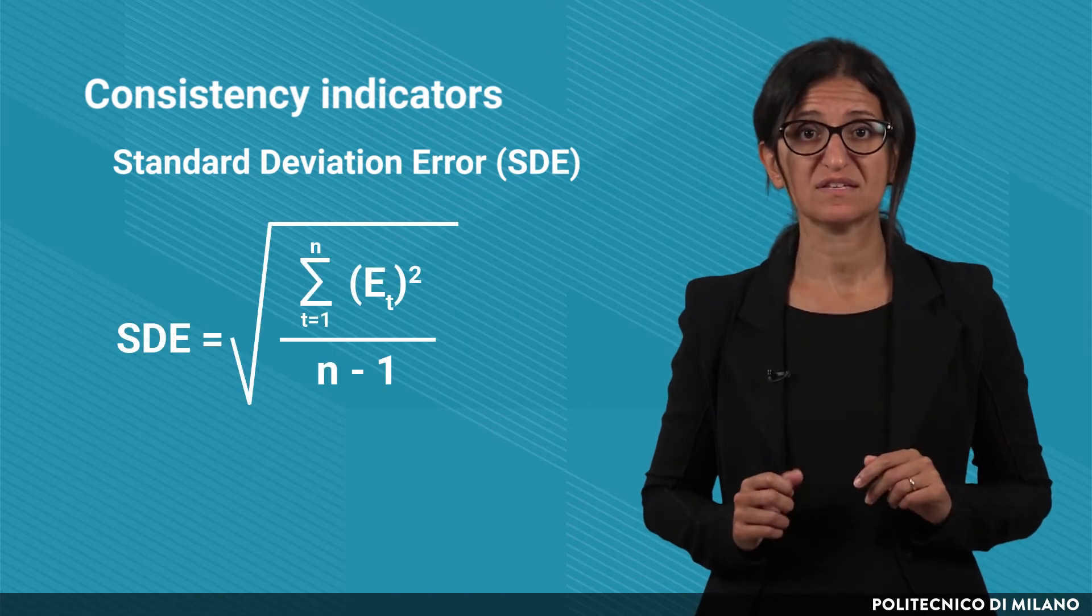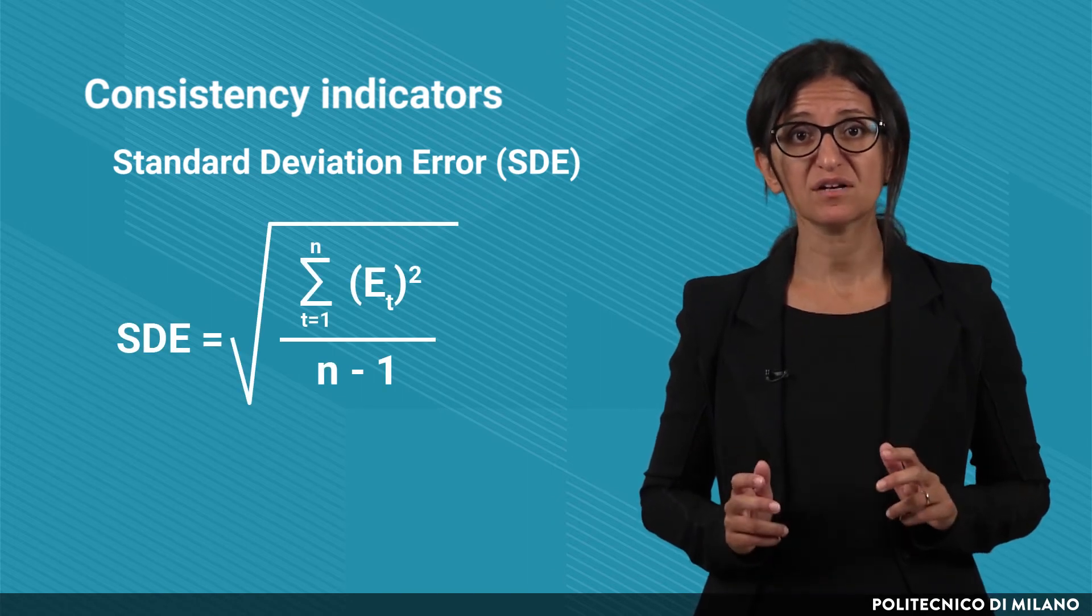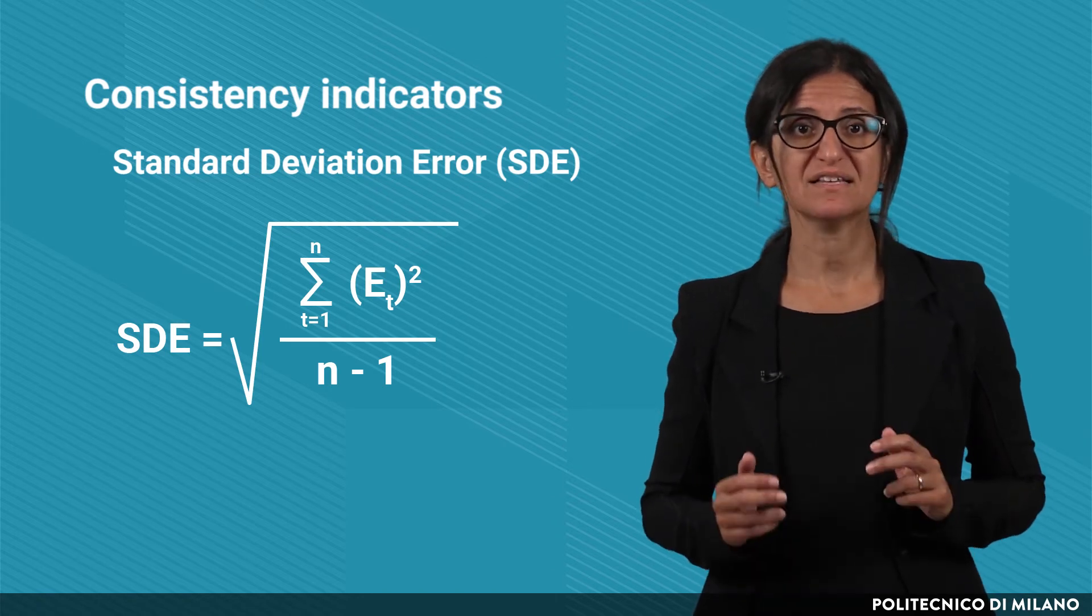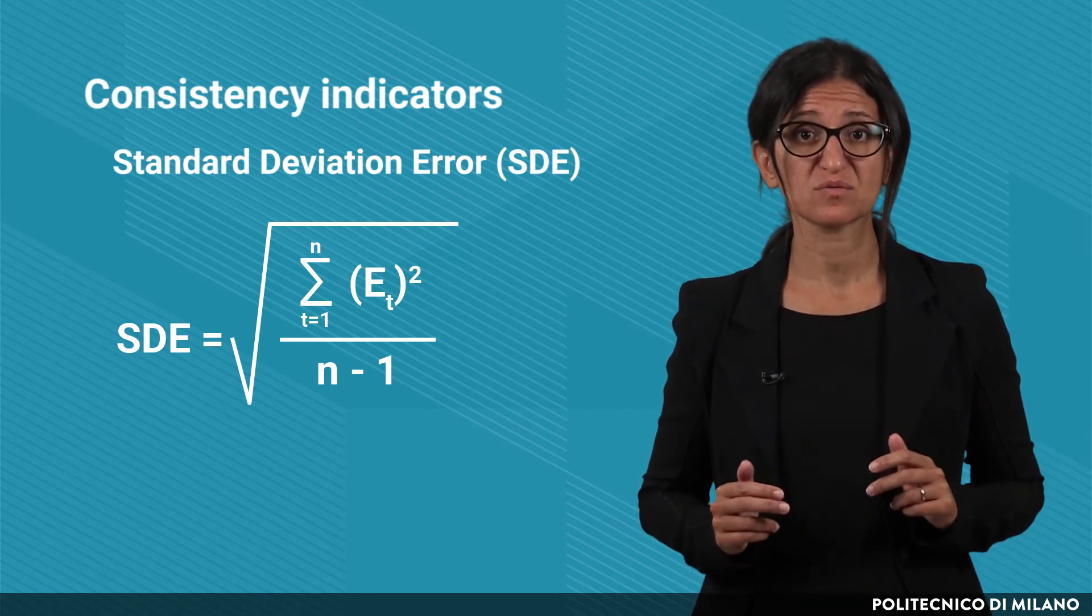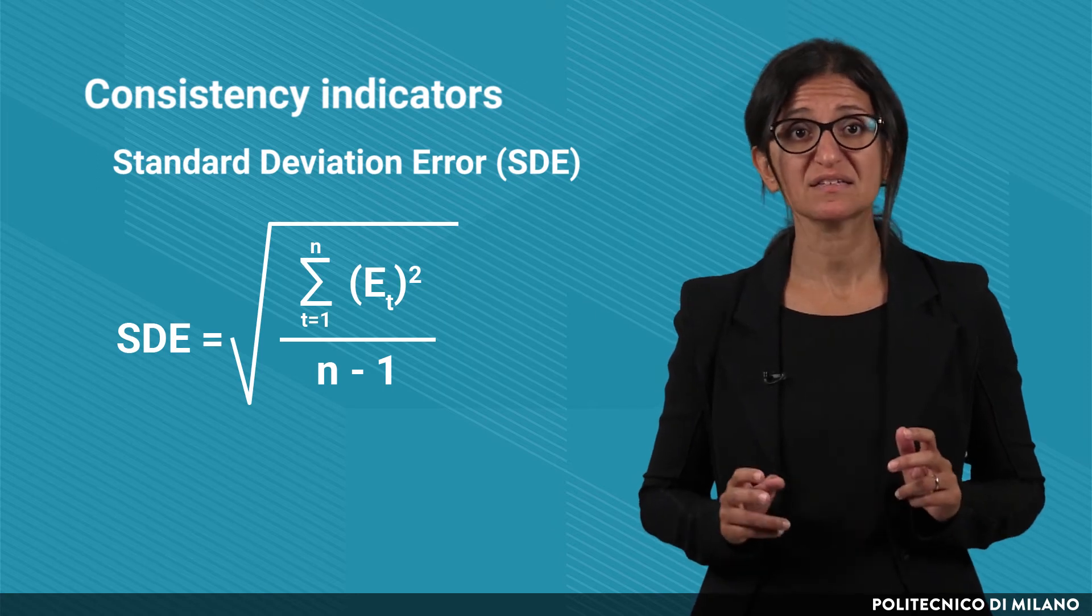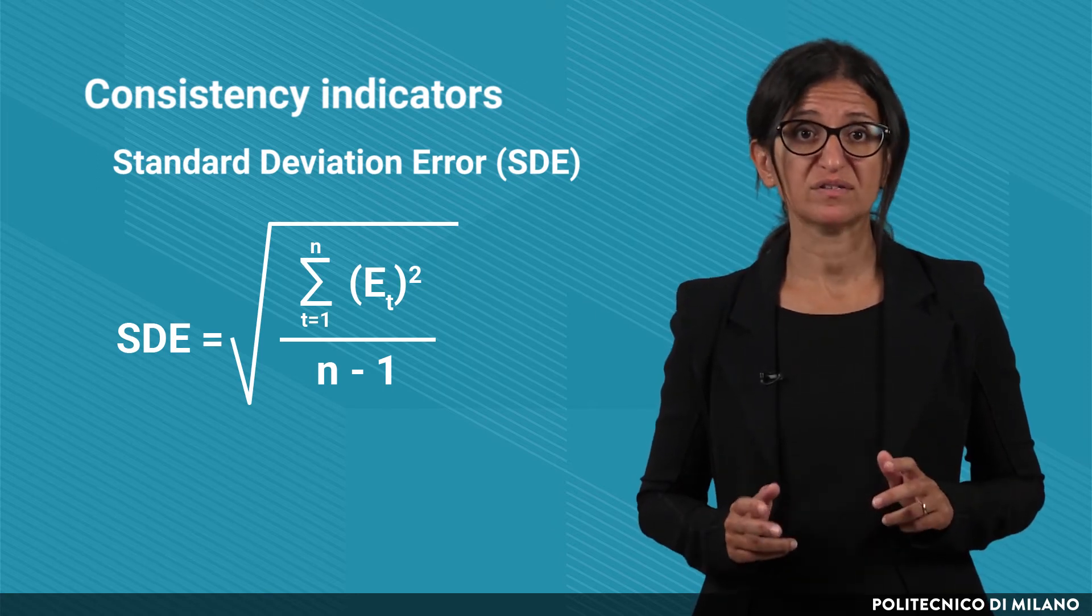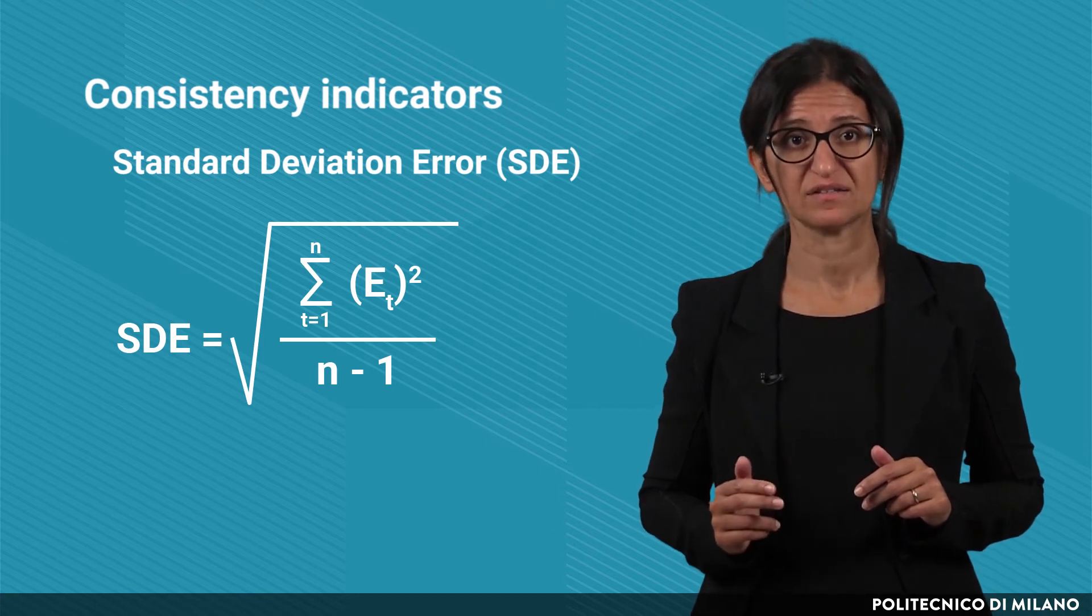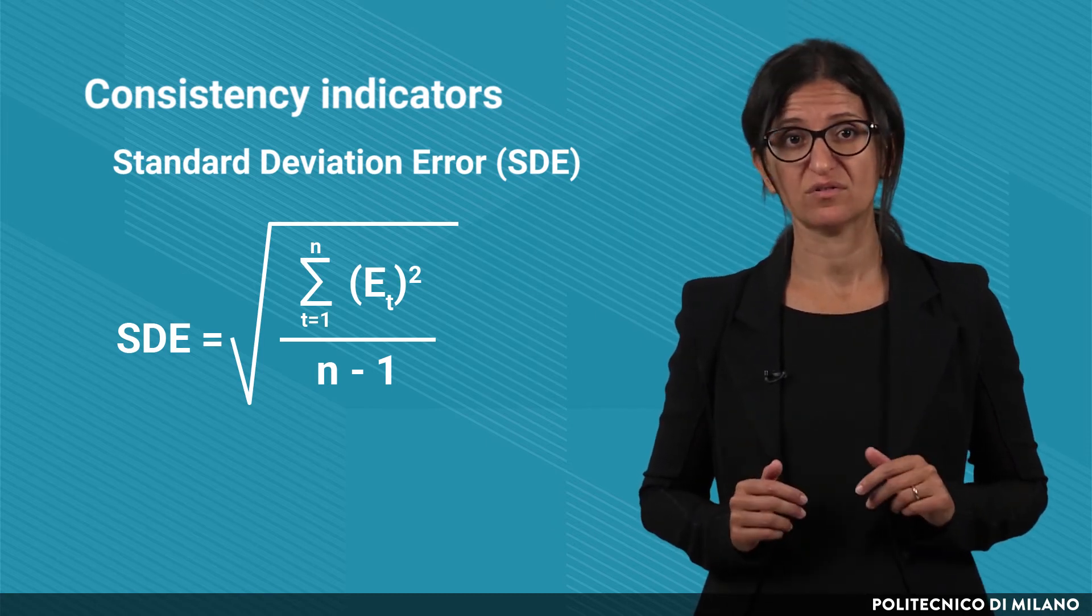The pros and cons of these indicators are similar to those related to the mean absolute deviation, but in this case, bigger errors weigh more, since we are taking the square errors, so it is useful when the seriousness of the errors increase significantly with the absolute value of the errors.